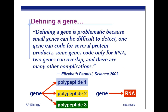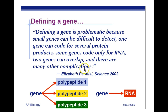Defining a gene is a problem because small genes can be difficult to detect. One gene can code for several protein products. Some genes code only for RNA. Two genes can overlap. There are also complications like epistasis, where one gene turns on another gene. Those kinds of things make genetics a lot more complicated, and that's why people spend their lives studying it.